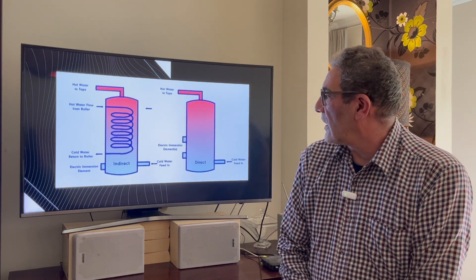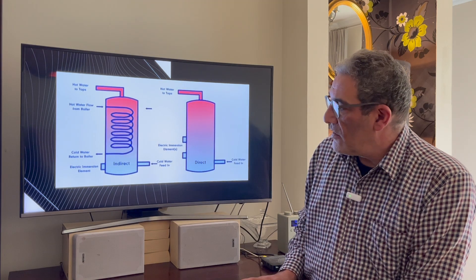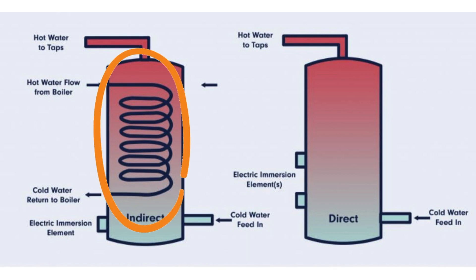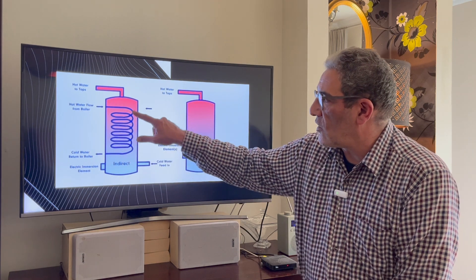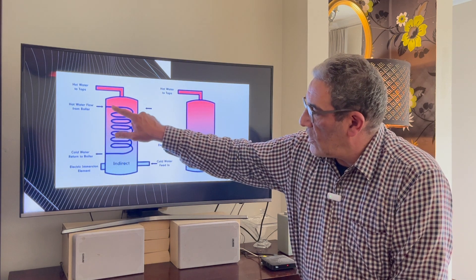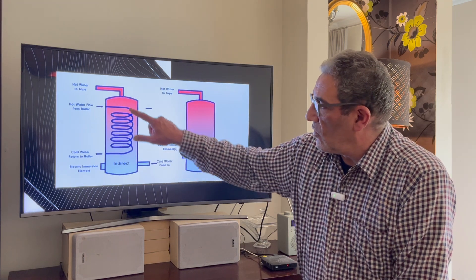In the direct cylinder, cold water comes in, is heated up by electric immersion elements, and then hot water is taken from the top to the domestic hot water outlets. In the indirect cylinder, there is a cold feed coming in and hot water going out, but inside there is a coil that gets fed and heated by the boiler — very hot water comes in, loses heat to the surrounding water, and goes back to the boiler to be heated again. The water inside the coil and the potable water outside do not mix.